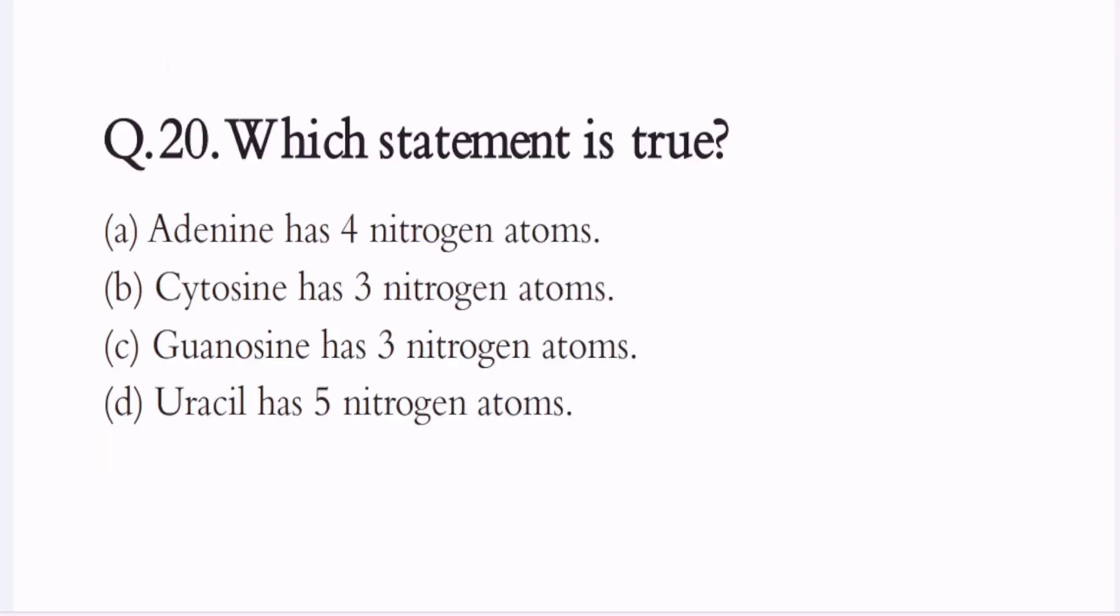Question 20. Which statement is true? A. Adenine has 4 nitrogen atoms. B. Cytosine has 3 nitrogen atoms. C. Guanosine has 3 nitrogen atoms. D. Uracil has 5 nitrogen atoms. The correct option is A. Adenine has 4 nitrogen atoms.